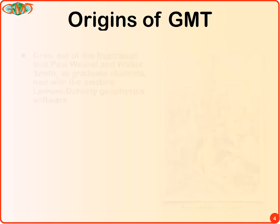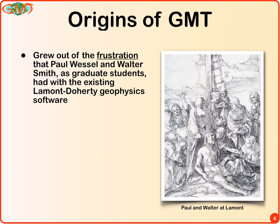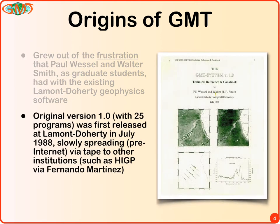GMT started back in the dark and dreary days of the 1980s when I was a grad student at Lamont. Walter and I were trying to do global geophysics, and it was extremely frustrating because the software was written in the 70s and expected punch card formats. After a while we realized we just had to start from scratch and write our own code. We found timestamps from 1987 in the earliest code. In 1988 we released version one at Lamont, and before the official 1991 release it spread slowly to different places — pre-internet — on tape or cartridge.